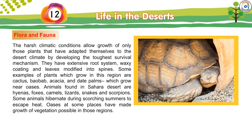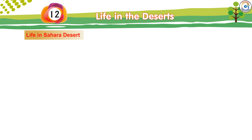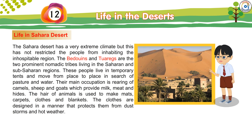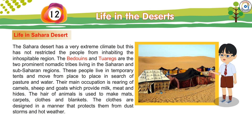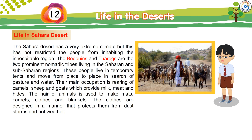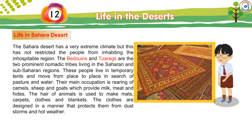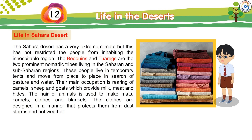Life in Sahara Desert: The Sahara Desert has a very extreme climate, but this has not restricted people from inhabiting the inhospitable region. The Bedouins and Tuaregs are the two prominent nomadic tribes living in the Saharan and Sub-Saharan regions. These people live in temporary tents and move from place to place in search of pasture and water. Their main occupation is rearing of camels, sheep, and goats, which provide milk, meat, and hides. The hair of animals is used to make mats, carpets, clothes, and blankets. The clothes are designed in a manner that protects them from dust, storms, and hot weather.